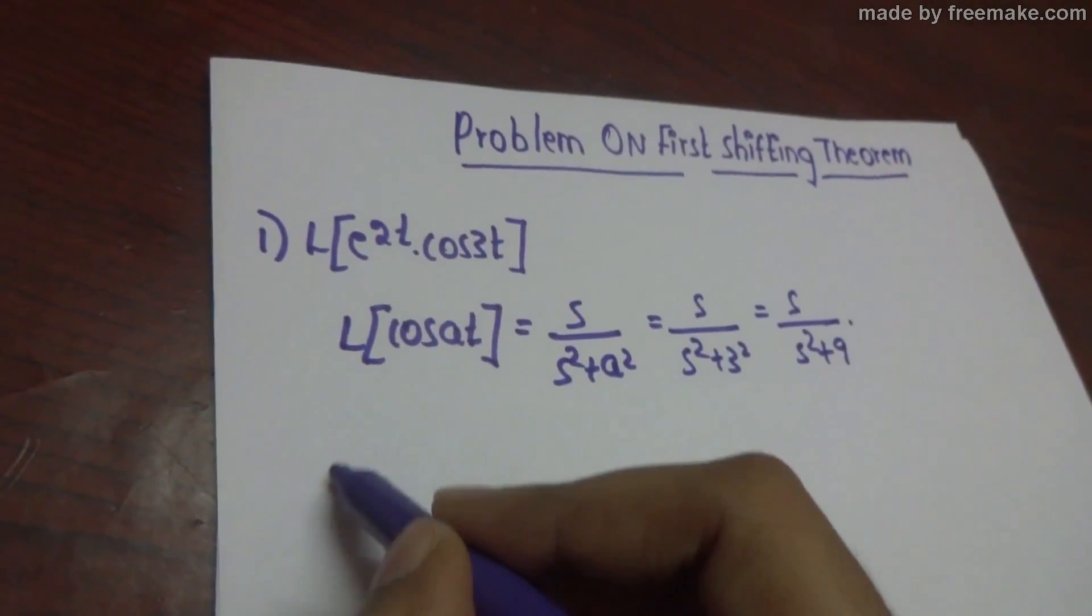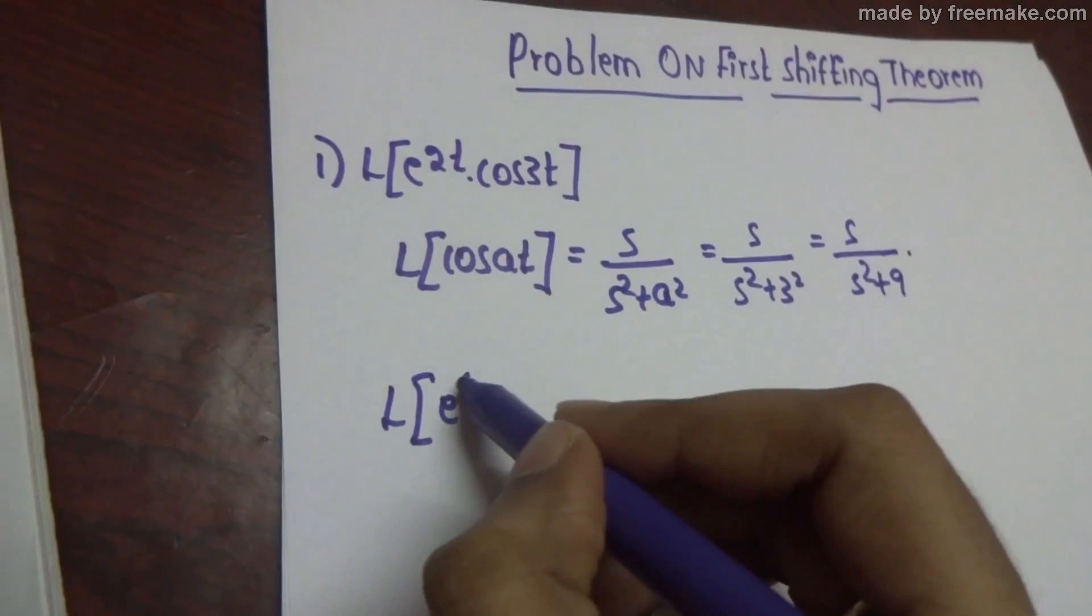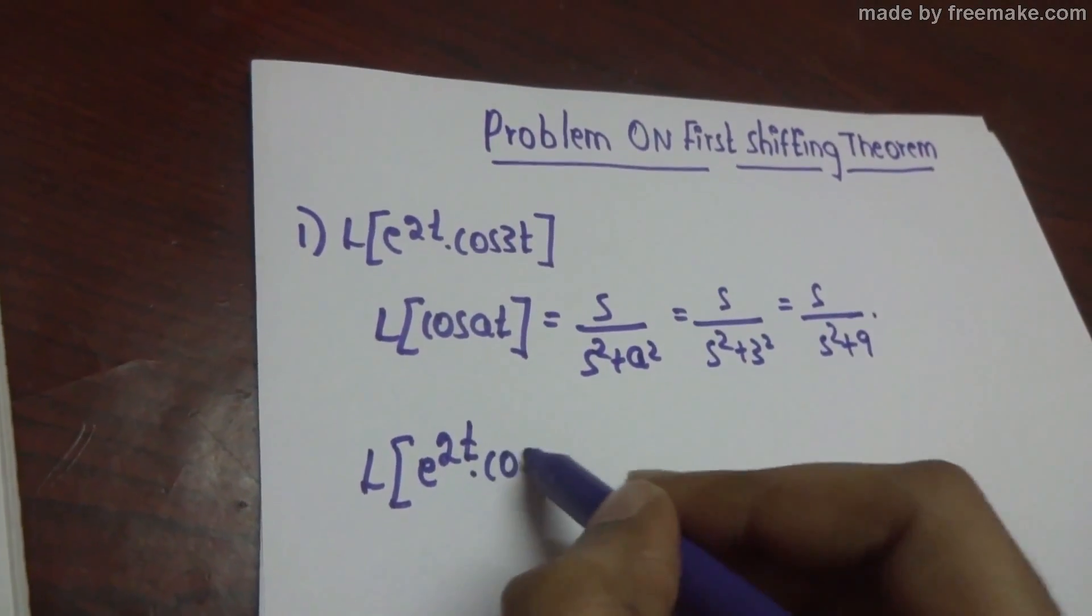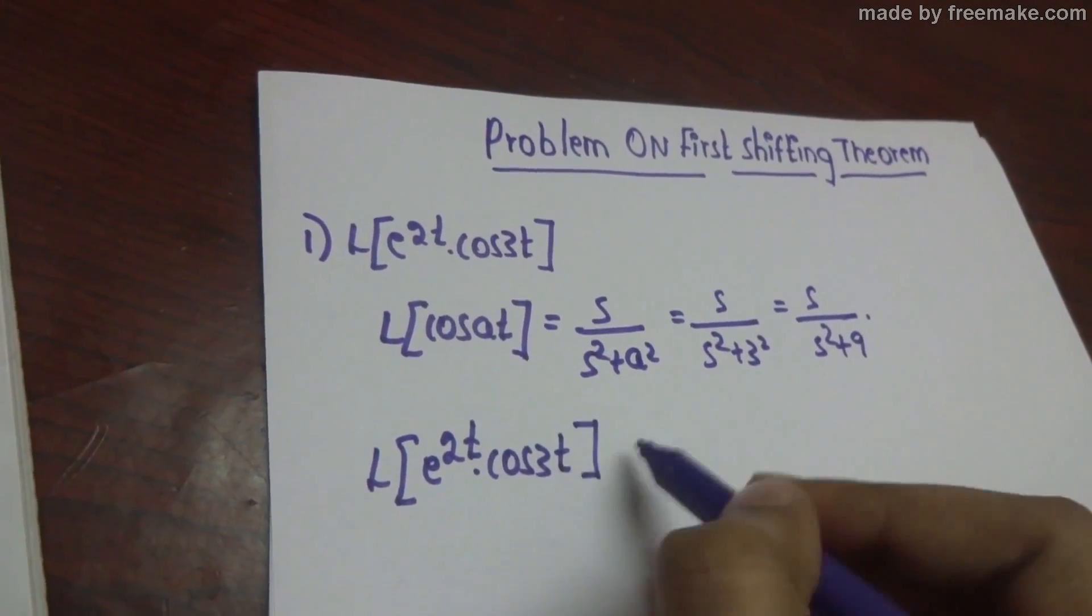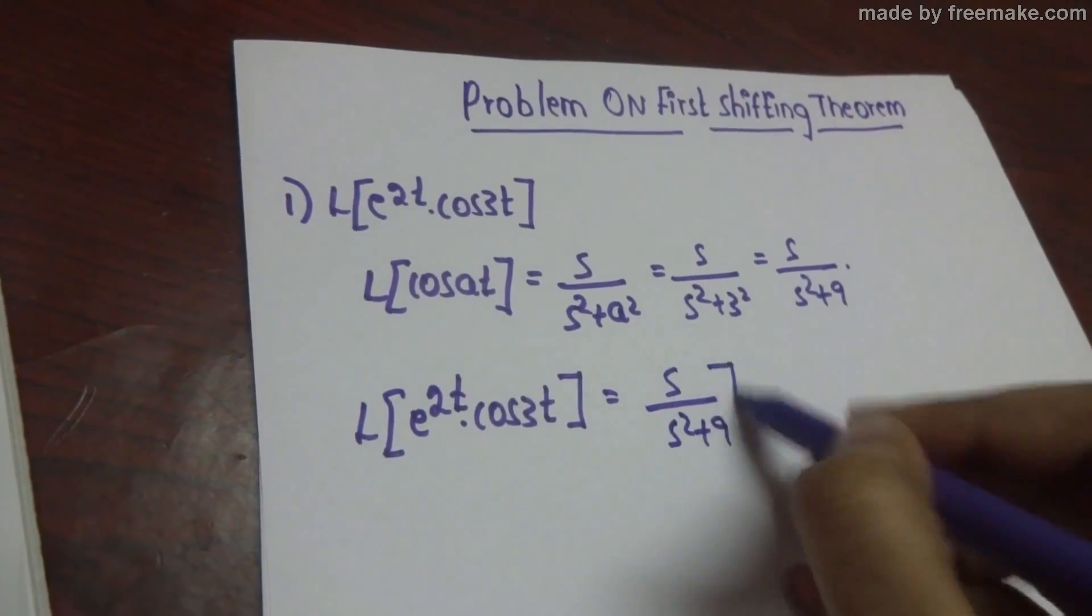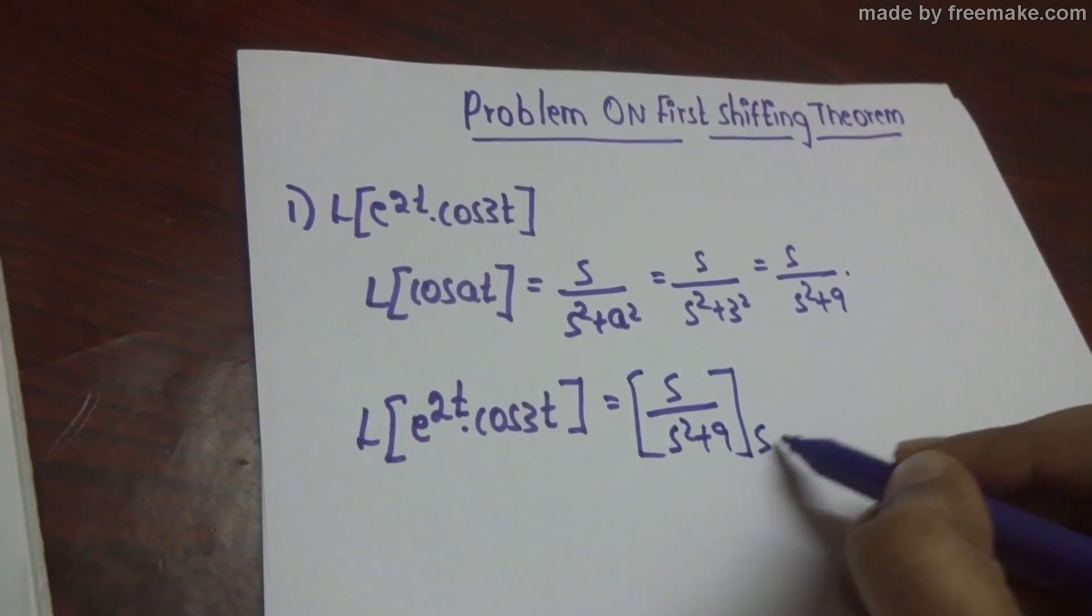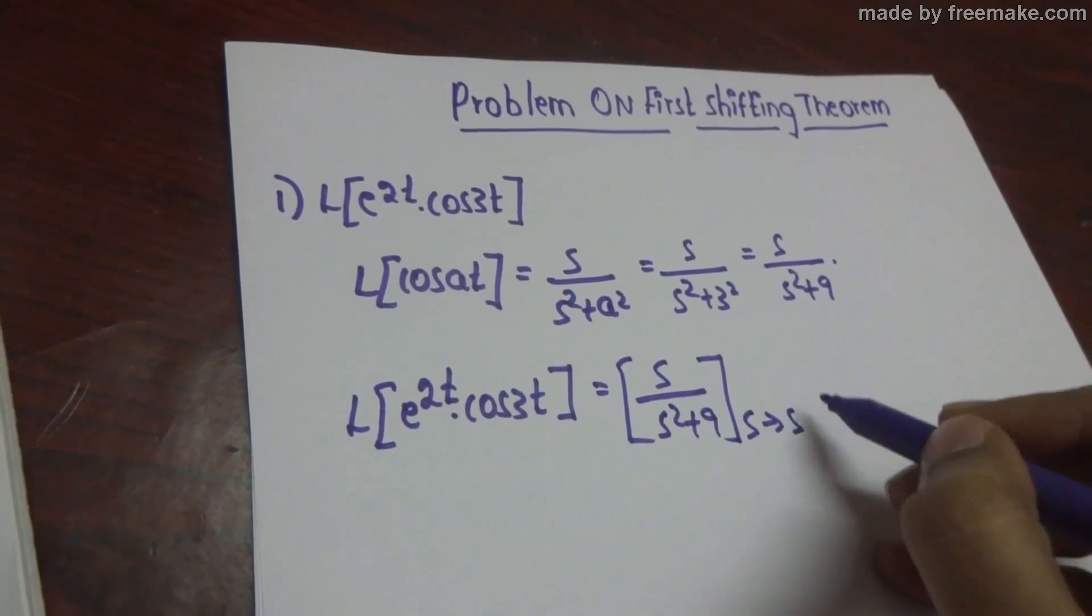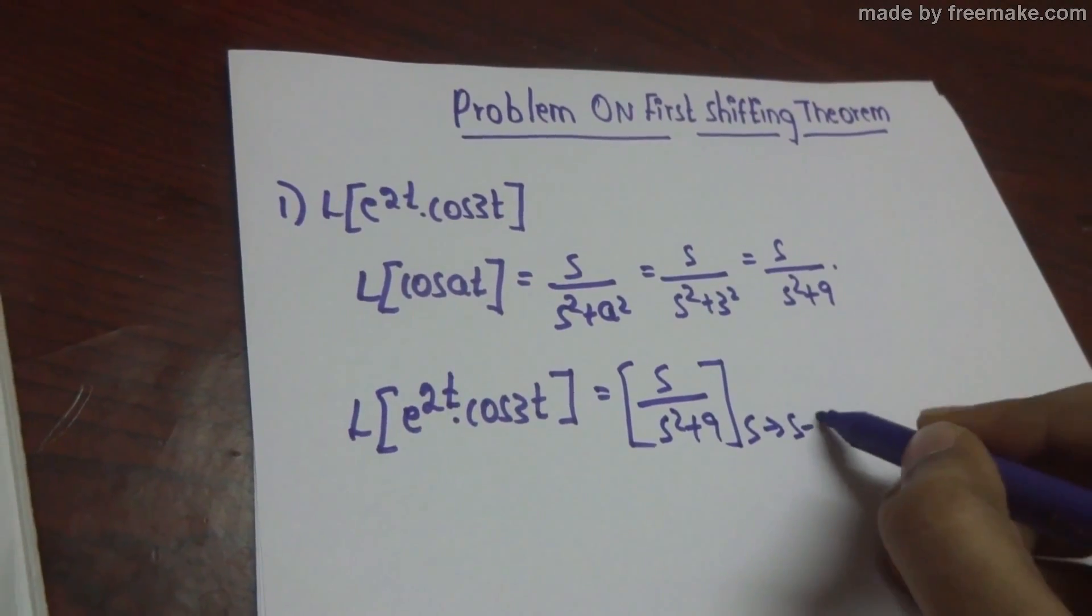Now Laplace of e^(2t) into cos(3t) is equal to s/(s^2 + 9). We will replace s with s minus a.